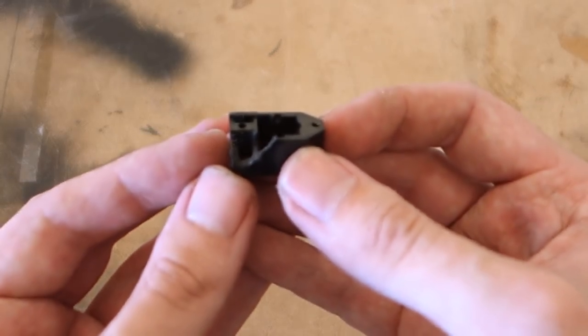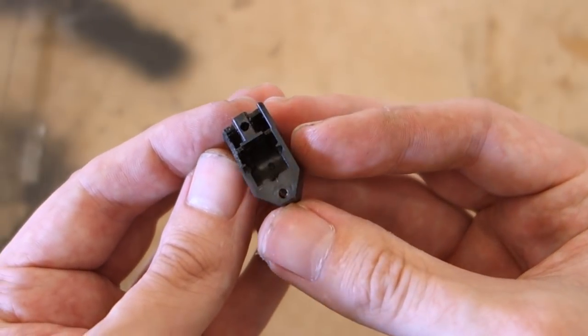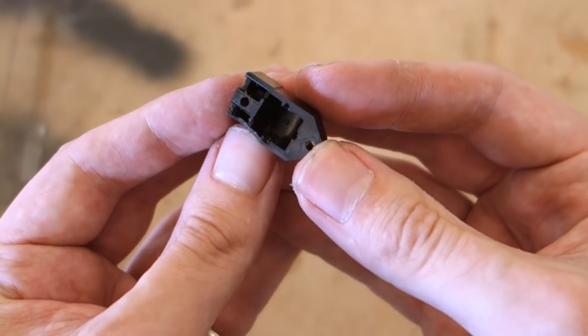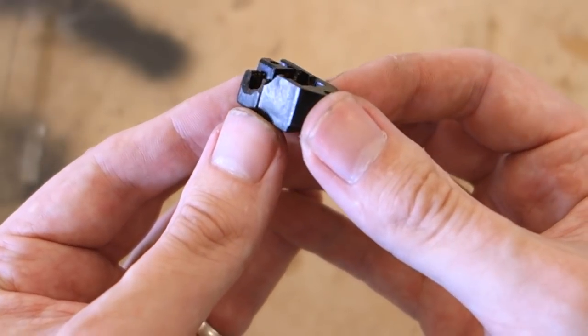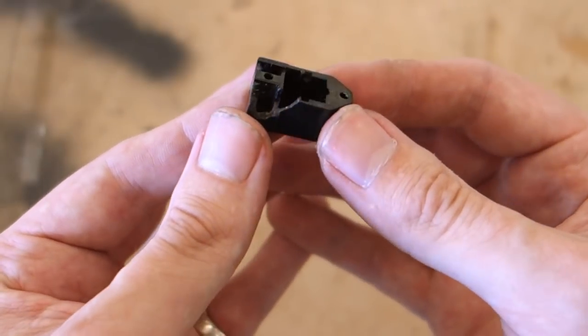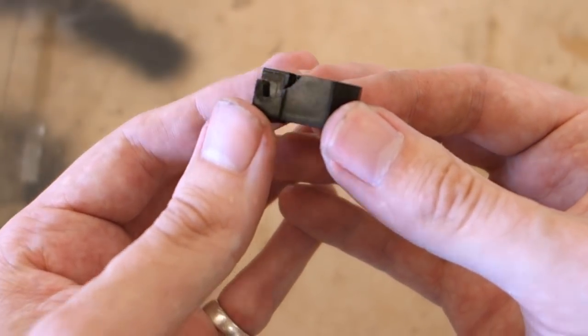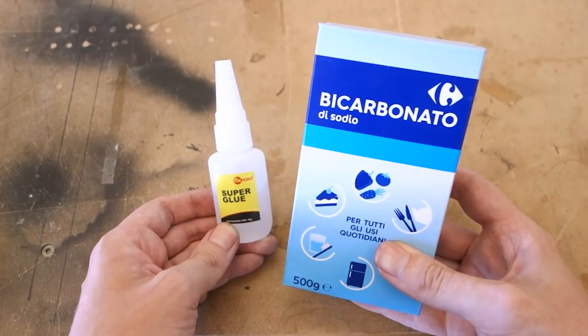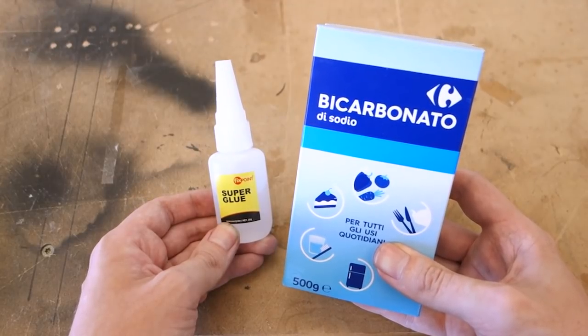So before we can put all the switches back together again, we have one more problem still to solve. One of the switches had a large chunk missing out of the Bakelite housing. While you could leave this open and the switch would likely work anyway, I don't like leaving jobs half done. So the way we're going to fix this is with some superglue and baking soda. Don't you worry, it will all make sense in a bit, I promise.